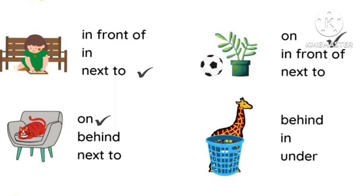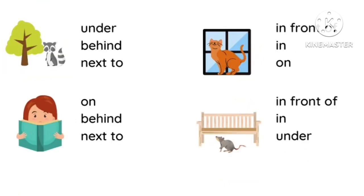Giraffe is behind the basket — basket ke peeche hai, hum usko bolenghe 'behind'. Ab dekhenge — cat kahan hai, tree se touch ho rhi hai, toh hum isko kya bolenghe: 'next to'. Cat is next to the tree. Agar aapko kuch aur feel ho rha hai, toh let me know in the comment section. Girl kya kar rhi hai — book read kar rhi hai. Girl is behind — book ke neeche hai. Cat is 'on' the window — uske upar hai, window par, toh hum bolenghe 'on the window'. Mouse chair ke neeche hai — neeche ko hum bolte hai 'under' — mouse is under the bench.